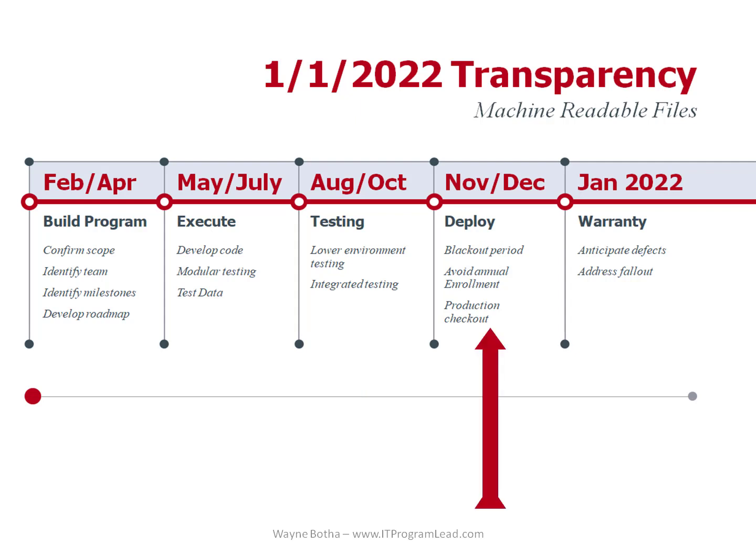A few things happen around the end of the year that could impact your program. Firstly, we have the Thanksgiving break — many people take time off during the holidays and work often slows down. Secondly, there is a blackout period from mid-December to early January when you cannot do regular production releases of your software. Thirdly, you might need to consider the annual enrollment period which could impact your systems. After the go-live in January, there will be support needed — there might be defects in the code or misunderstood requirements that will only surface in the production environment.